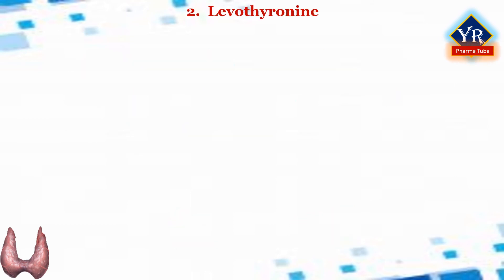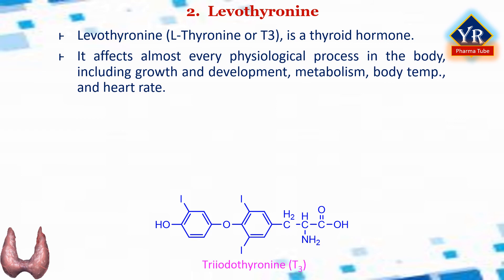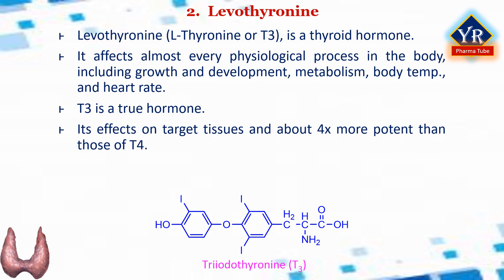The next drug is levothyronine. Levothyronine, also known as L-triiodothyronine or T3, is a thyroid hormone. It affects almost every physiological process in the body including growth and development, metabolism, body temperature, and heart rate. It is a true hormone; its effects on target tissues are about 4 times more potent than those of T4. Of the thyroid hormone that is produced, just about 20% is T3 whereas 80% is produced as T4. Roughly 85% of the circulating T3 is later formed in the liver and anterior pituitary by removal of the iodine atom from carbon atom number 5 of the outer ring of T4. The concentration of T3 in the human blood plasma is about 1/40th that of T4. It is chemically L-3,4-(4-hydroxy-3-iodophenoxy)-3,5-diiodophenylalanine.